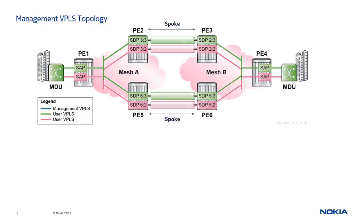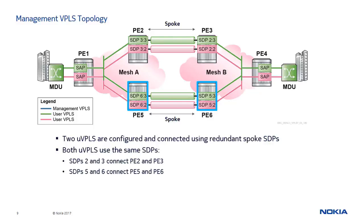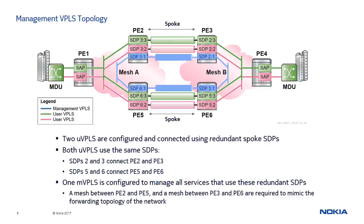Let's view a management VPLS topology. In the diagram, two VPLSes are joined using redundant spoke SDPs — they both use the same SDPs. SDPs 2 and 3 connect PE2 and PE3 while SDPs 5 and 6 connect PE5 and PE6. One management VPLS is configured to manage the two UVPLSes. On PE2, the MVPLS manages all UVPLSes that use SDP 3 to reach PE3, and on PE3, it manages all UVPLSes that use SDP 2 to reach PE2. A similar behavior is seen on PE5 and PE6. Mesh SDPs between PE2 and PE5 and between PE3 and PE6 are required under the MVPLS to mimic the topology of the services it is responsible for.